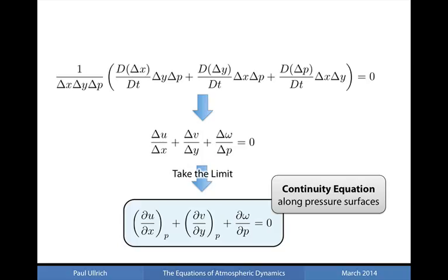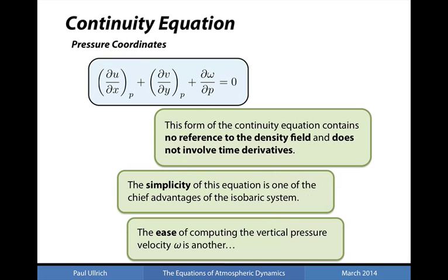This represents our new continuity equation along pressure surfaces. Interestingly, this equation does not involve time derivatives and does not contain any reference to the density field — it only contains quantities associated with the velocity field. This is a diagnostic equation restricting how the velocity field can be defined at any point in the domain: given u and v, omega must satisfy this relationship. The simplicity of this equation, having eliminated thermodynamic variables, is one of the chief advantages of the isobaric coordinate system.